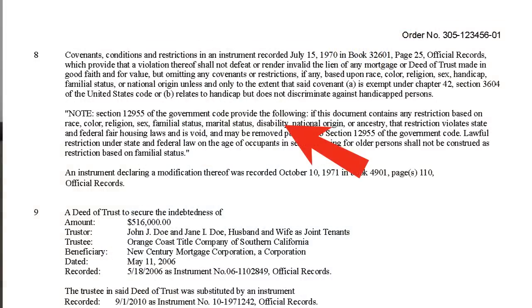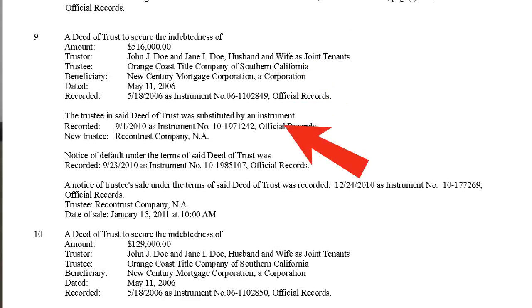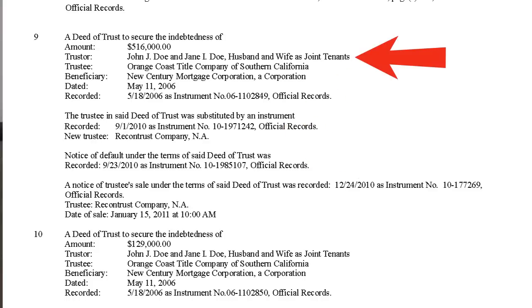Moving on to the next page: item number eight covers CC&Rs — covenants, conditions, and restrictions. These are limitations and qualifications imposed on the use of a particular parcel of land. Item number nine is a deed of trust, which conveys title to a particular property to a neutral third party, or trustee, with limited powers such as power of sale, for the purpose of securing a loan. The three parties to this document are the trustor (the borrower), the trustee, and the beneficiary (the lender).